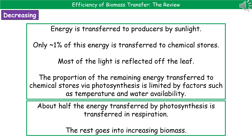Welcome to our review on efficiency of biomass transfer. The first thing we need to do before we can talk about energy transfers within a food chain is to think about where the energy originates. Hopefully, if we think back to key stage three, we'll remember that the sun is the ultimate source of energy. The producers absorb that light energy, which is then used in the process of photosynthesis.